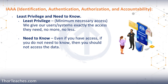Then we have the second A of the IAAA model, that is authorization. This is where we determine, now that this person has logged in and proven who they are, what do we give them access to. Depending on the type of organization, we can choose different types of access control models. The most common types, and the ones you may see on the exam, are DAC (discretionary access control), MAC (mandatory access control), RBAC (role-based access control), and ABAC (attribute-based access control).